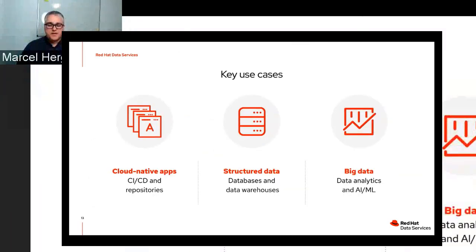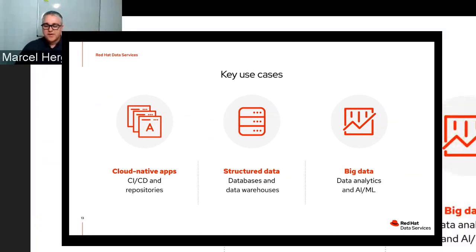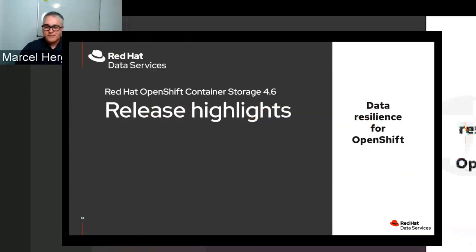Key use cases with customers include cloud-native apps, CI/CD repositories, structured data like databases and data warehouses — with a great example of IBM DB2 Warehouse achieving excellent results with OCS — and big data/AI/ML where OpenShift Container Storage serves as a data lake, allowing multiple applications to access the same datasets without moving data around.